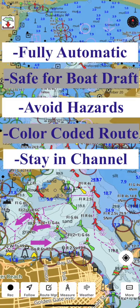Automatic slip-to-slip boat routing finds an optimal route between two points. It finds a route that is safe given the boat's draft while avoiding known hazards, obstructions, and shallows. It also attempts to use the navigation buoys info whenever possible to keep you in the channel.